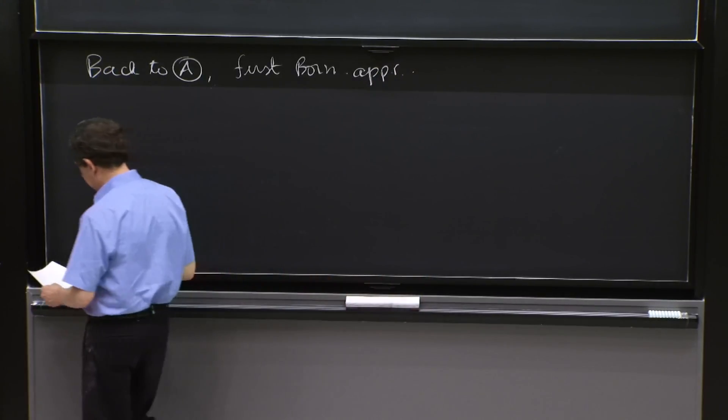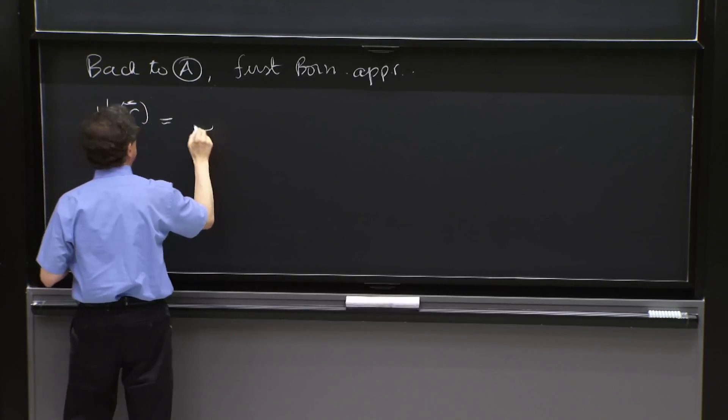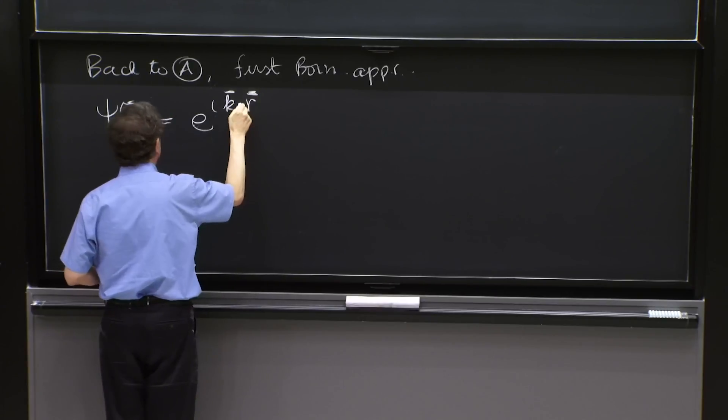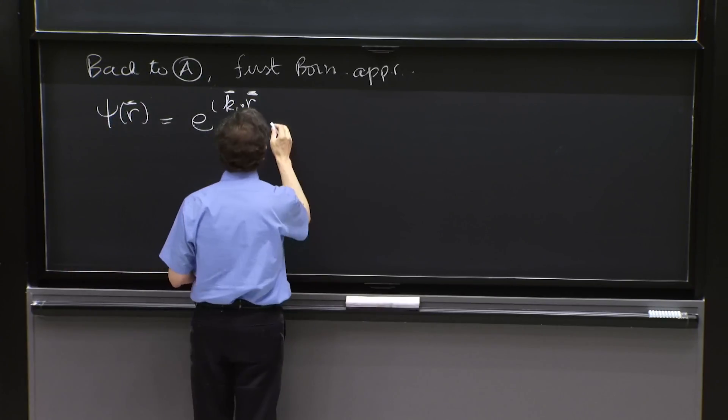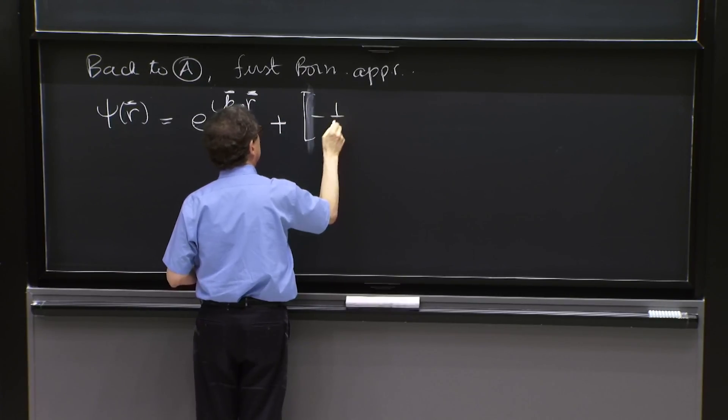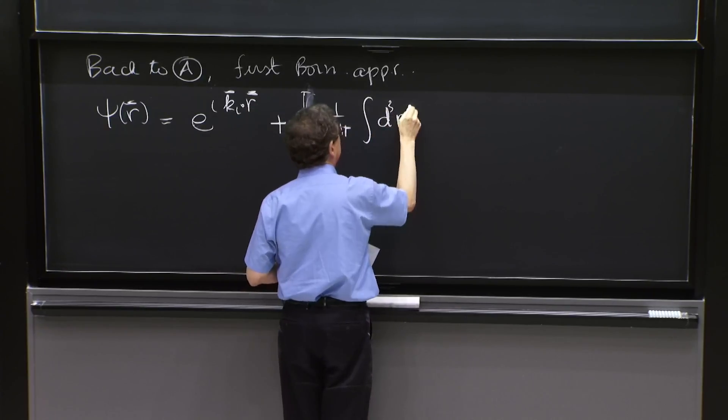gives us psi of r equals e to the ikir. Now we put all the indices, all the arrows,